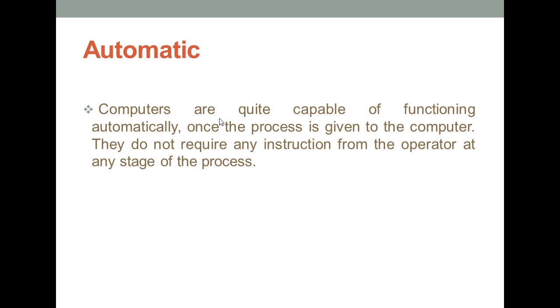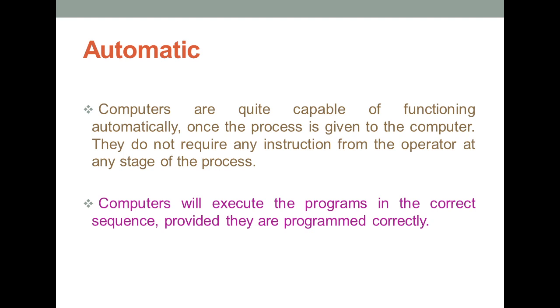The next characteristic of a computer is that it is automatic in nature. Computers are capable of functioning automatically — once a set of instructions is fed into the computer, they do not require instruction from the operator at any stage of the process. Computers execute programs in a correct sequence, provided they are programmed correctly.